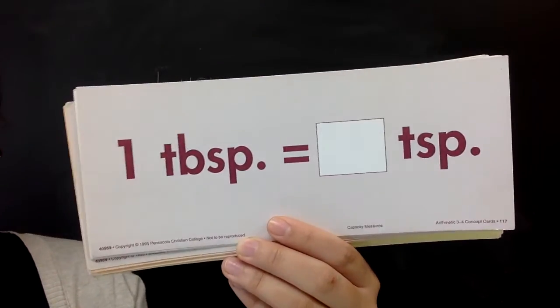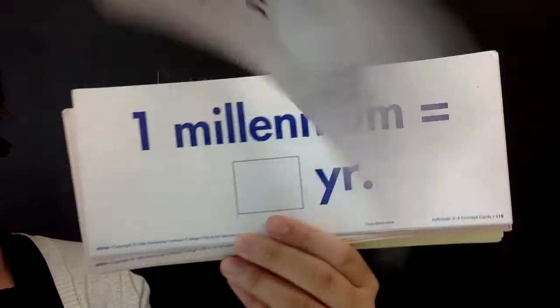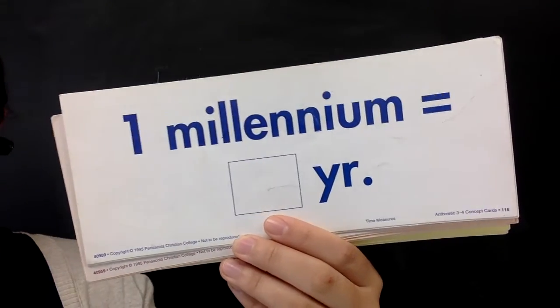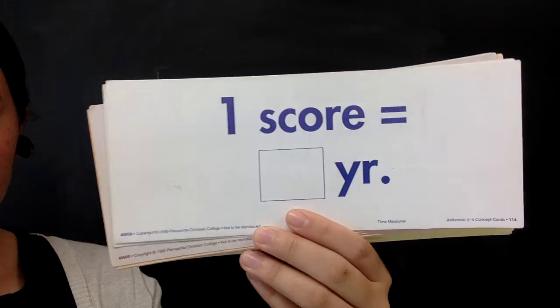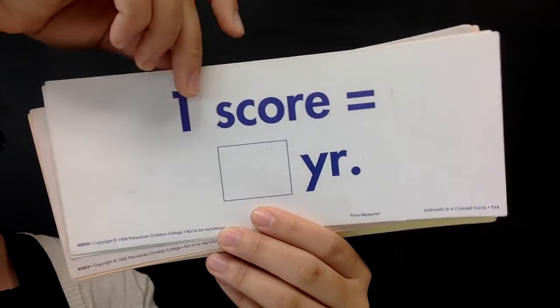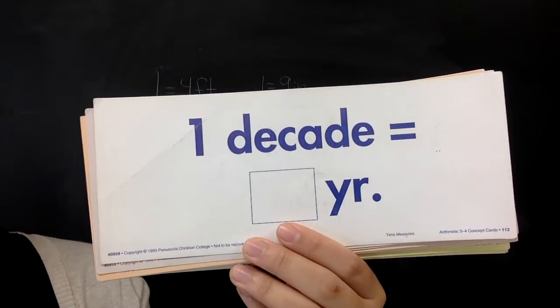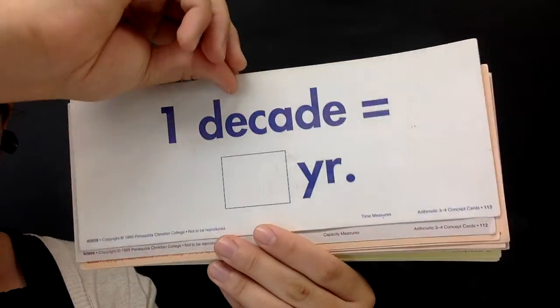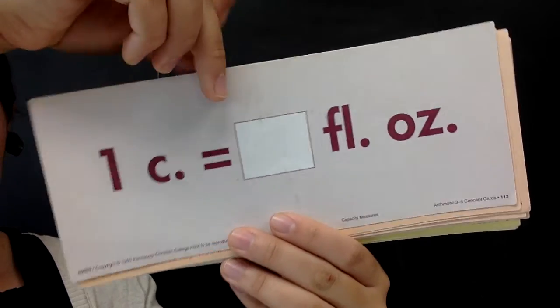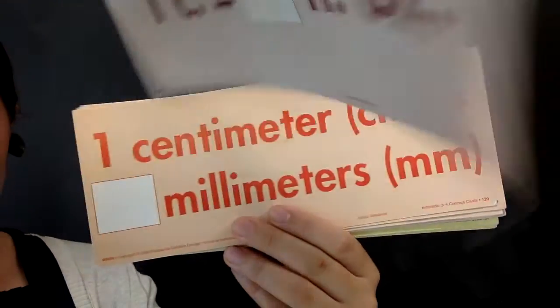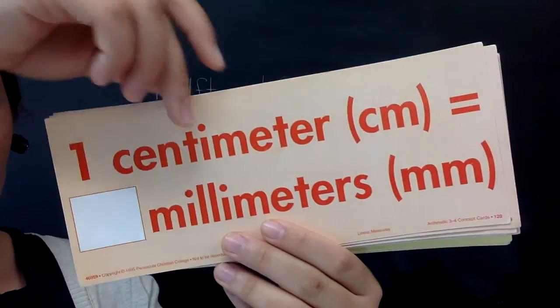One tablespoon equals how many teaspoons? Three. One millennium equals how many years? One thousand. One score equals how many years? Twenty. One decade equals how many years? Ten. One cup equals how many fluid ounces? Eight. One centimeter equals how many millimeters? Ten.